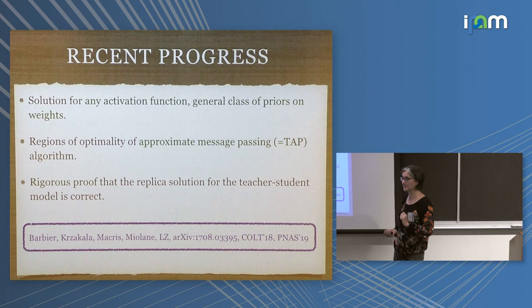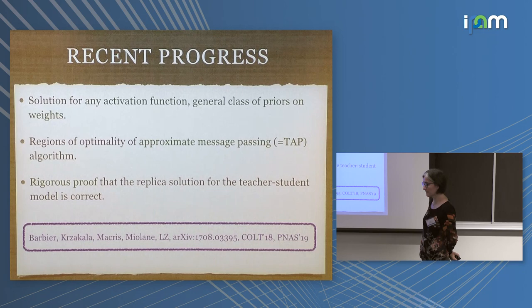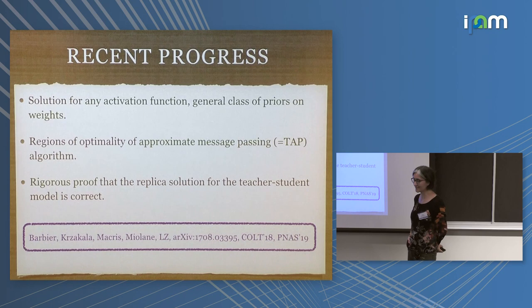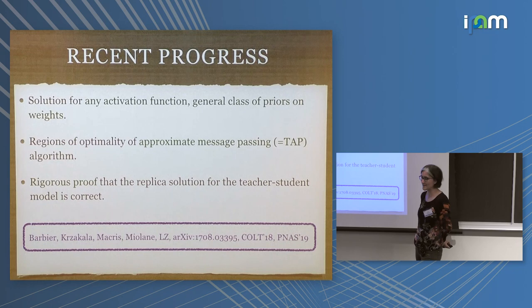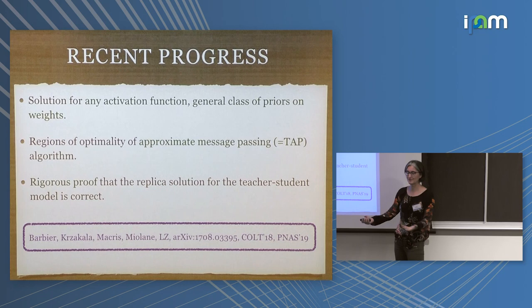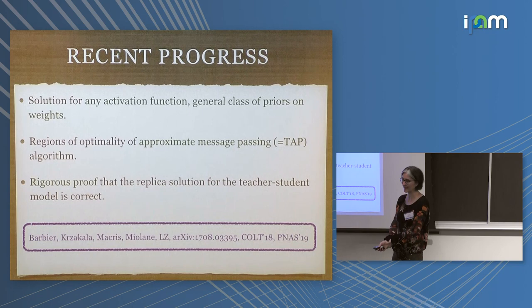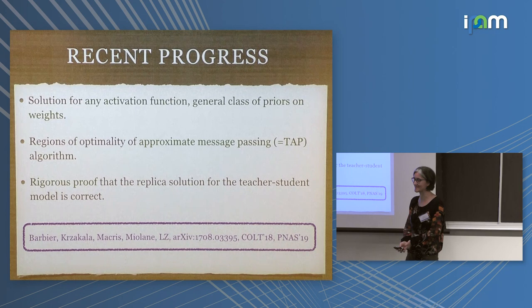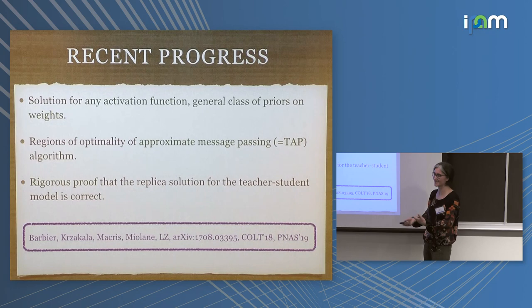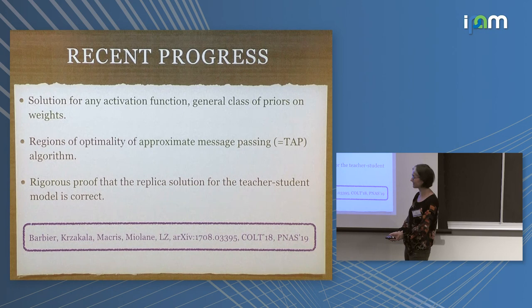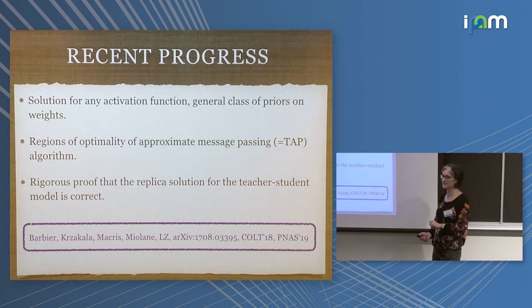An audience member asks: was the machine learning community following this work? Yes — these were physics journals, but in the 90s when NeurIPS started, people like Jan LeCun knew each other. Even Jitendra Malik, the main person in image processing at Berkeley, keeps the blue book by Hertz on his desk. It was in the 2000s that physicists really moved on to other things — but the important people were aware of this work.